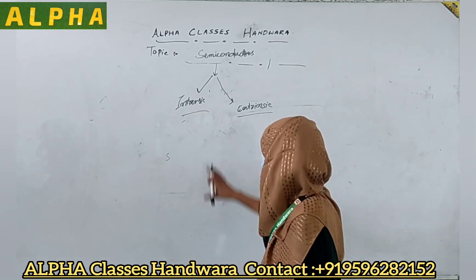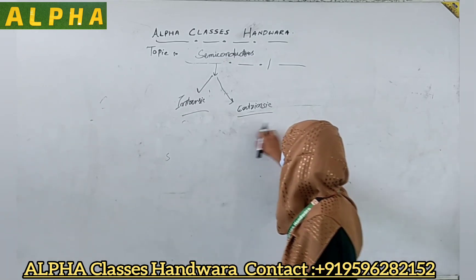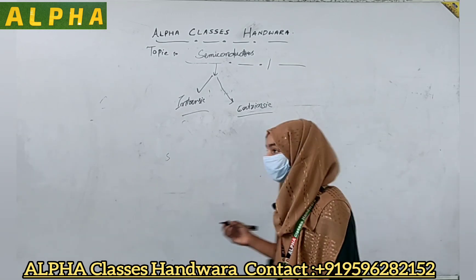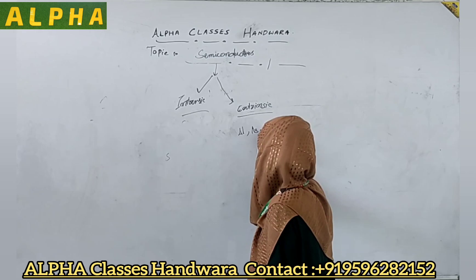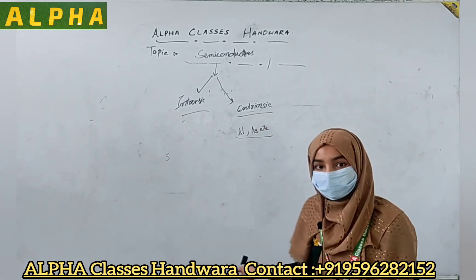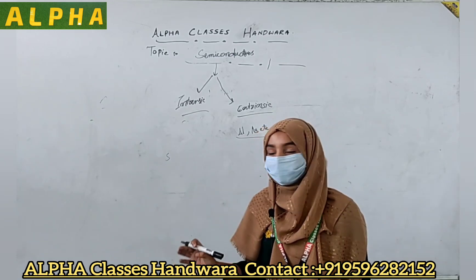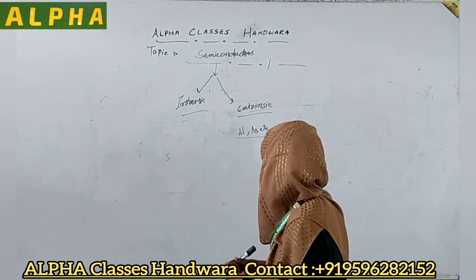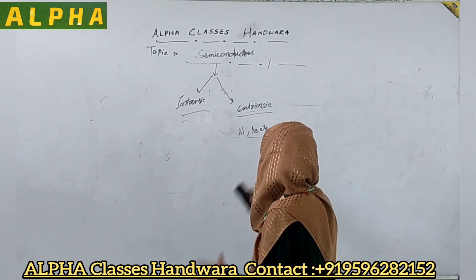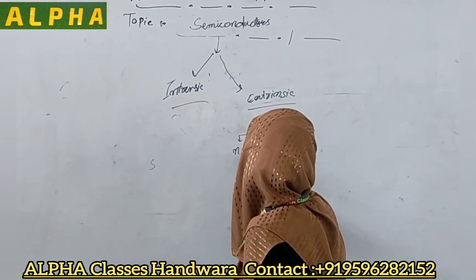Intrinsic semiconductors are those semiconductors which do not involve adding any impurity. What are extrinsic semiconductors? Extrinsic semiconductors are those semiconductors in which we have added some impurities like aluminium or arsenic. We add these dopants or impurities to increase the efficiency of the semiconductor. The whole process of adding impurity is called doping, which increases the conductivity and efficiency of the semiconductor.